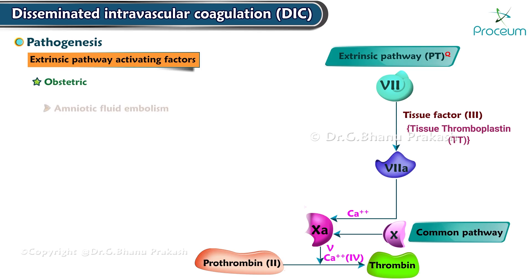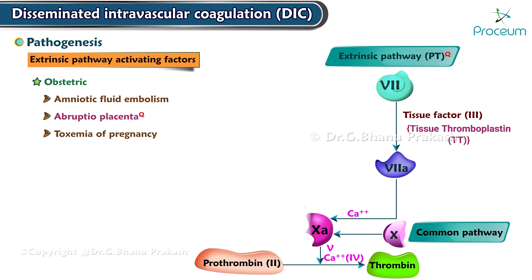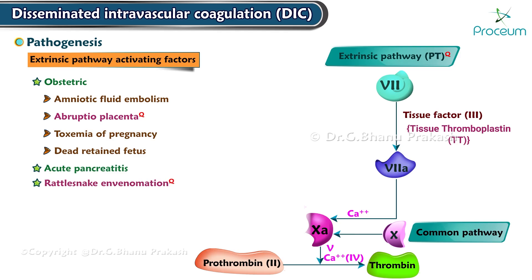Obstetric problems like amniotic fluid embolism, abruptio placenta, toxemia of pregnancy, dead retained fetus, acute pancreatitis, rattlesnake venom, and acute respiratory distress syndrome can all activate the extrinsic pathway.